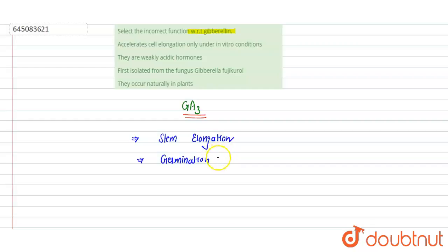Development of flower, breaking of dormancy - these are involved in various metabolic activity and developmental activity in the plant. That's why these are also known as plant growth regulators. Now we have to choose which one is the incorrect function with respect to gibberellin.